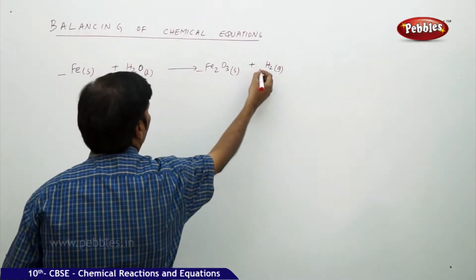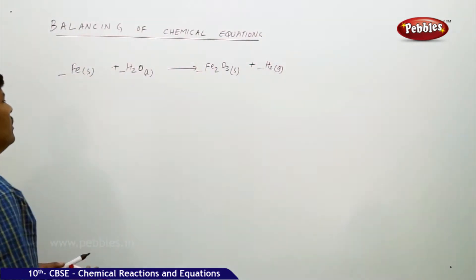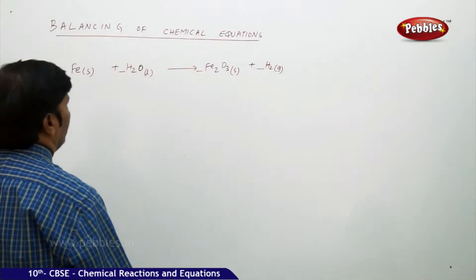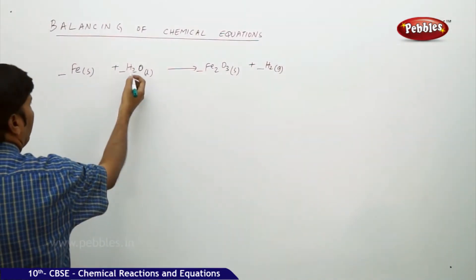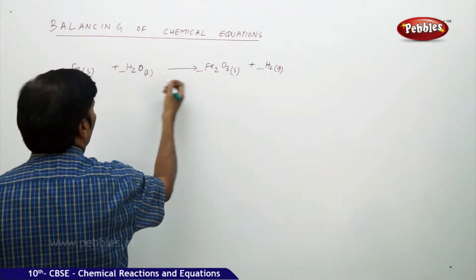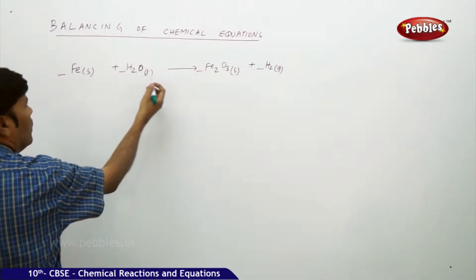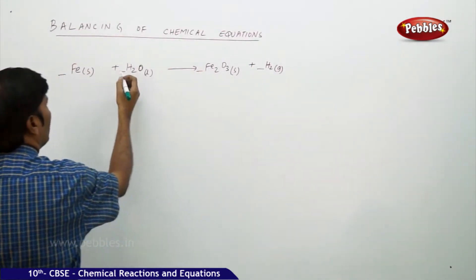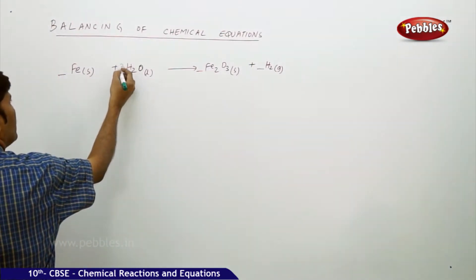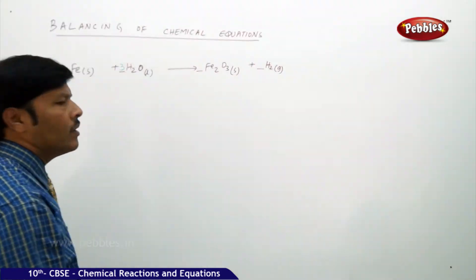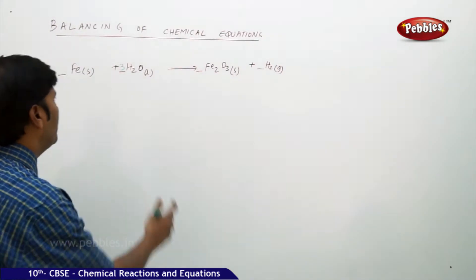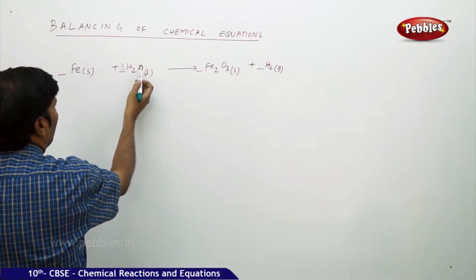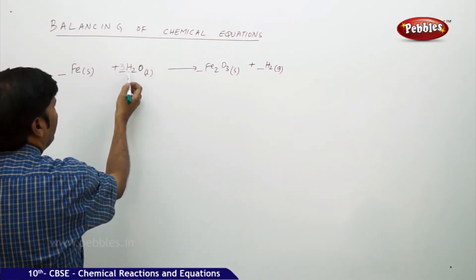We can see that the number of hydrogens are 2 on the left side, and on the right side the number of oxygens are 3 but we have only one oxygen in H₂O. So the first thing I am going to do is place a molar coefficient of 3 beside water. This 3 is not only balancing the number of oxygens, it is also balancing the number of hydrogens.